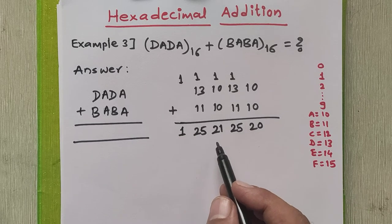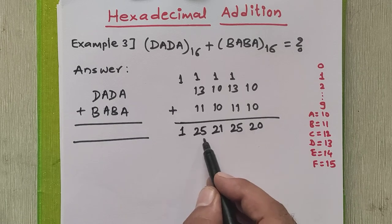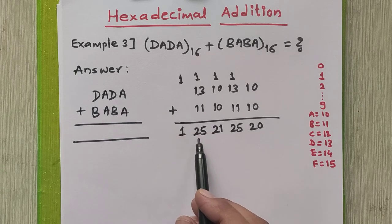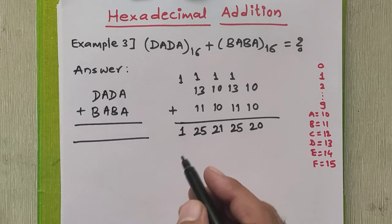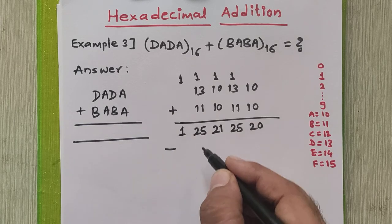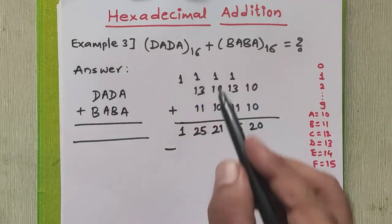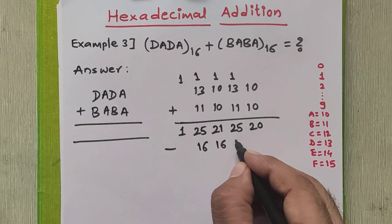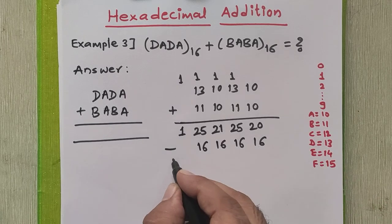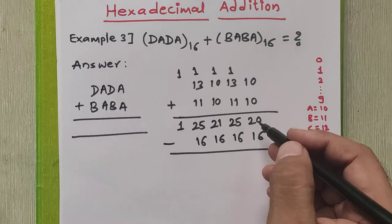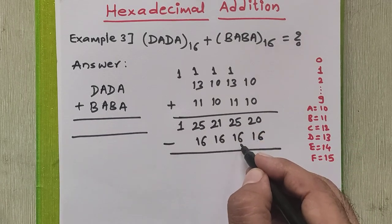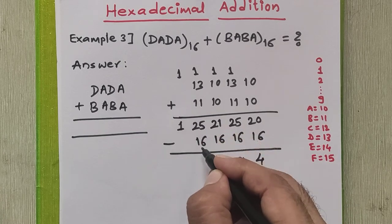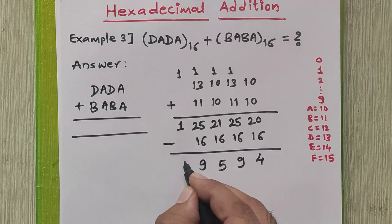Looking at the result, the digits 25, 21, 25, and 20 are all invalid hexadecimal digits. Whenever there are invalid digits in the hexadecimal result, we apply rule two and subtract the base of the system — that is 16 — from each invalid digit. So: 20 minus 16 is 4, 25 minus 16 is 9, 21 minus 16 is 5, 25 minus 16 is 9, and the leading 1 remains as it is.